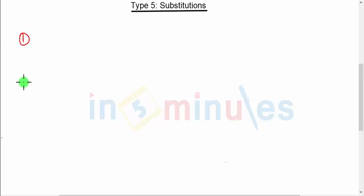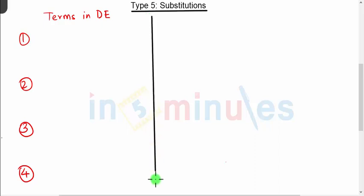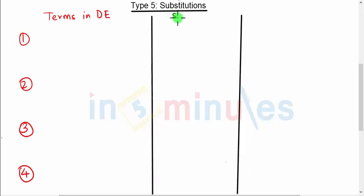Hello everyone, welcome to 'In 5 Minutes.' In this video we are going to see Type 5 of differential equations, that is the method of substitutions. In this method we will substitute some terms in our differential equation. We have five basic substitution types, and whenever these terms appear in your differential equation, you have to do the corresponding substitution.